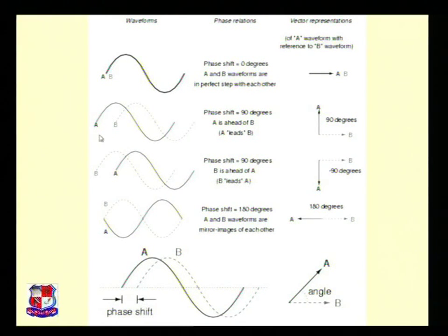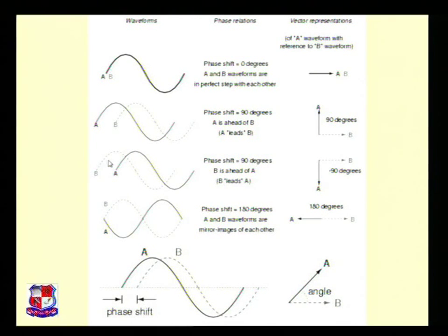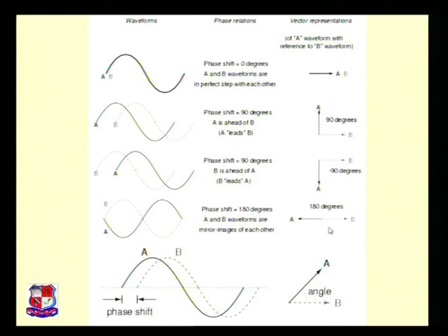In the third figure, A is lagging and B is leading, so B starts earlier and A starts after — again a phase difference of 90 degrees. In the fourth figure, there is a phase shift or phase difference of 180 degrees, meaning both A and B signals are in opposite directions.